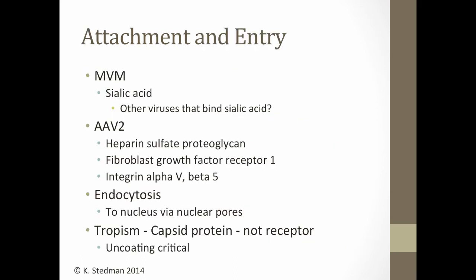How do these viruses get into cells? It's kind of the same story you've heard for most viruses this quarter. The minute virus of mice, which is an autonomous single-stranded DNA virus, gets into the cell via sialic acid on the membranes of cells. Other viruses that get into cells via sialic acid — you can probably think of at least a handful you've learned about this quarter. Adeno-associated viruses — you have a whole list. These are typical ways that viruses get into cells.